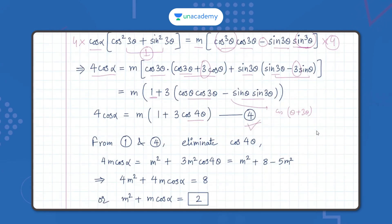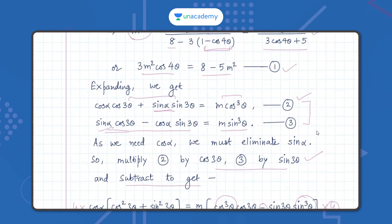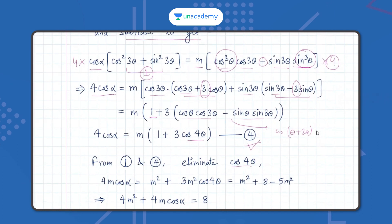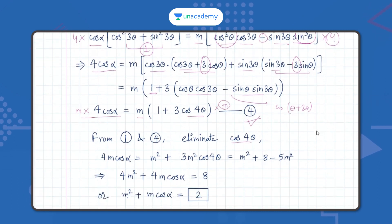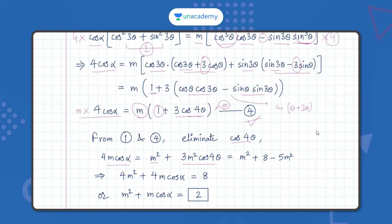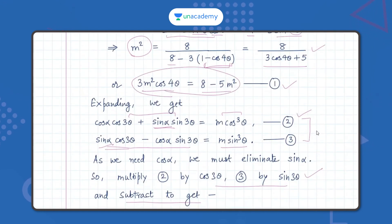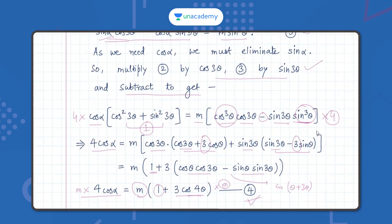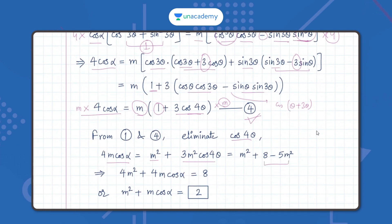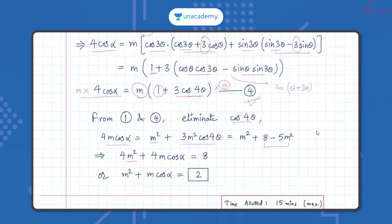From equation 4 and equation 1, we eliminate cos4θ. Multiplying equation 4 through by m gives 4m·cosα = m²·(1 + 3cos4θ) = m² + 3m²·cos4θ. Substituting 3m²·cos4θ = 8 - 5m² from equation 1: 4m·cosα = m² + 8 - 5m², which gives 4m² + 4m·cosα = 8. Dividing by 4, we get the final answer: m² + m·cosα = 2.